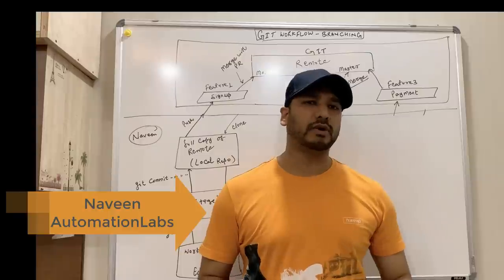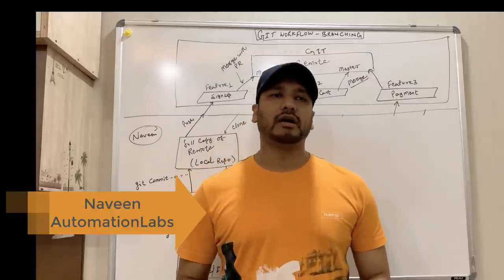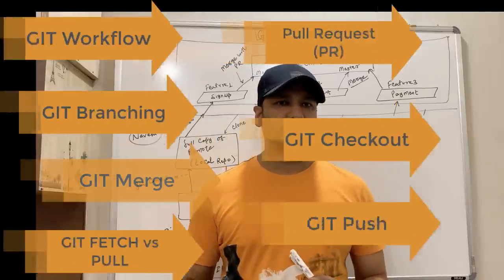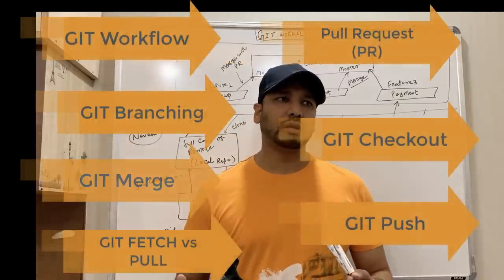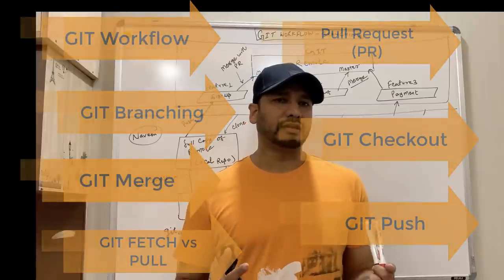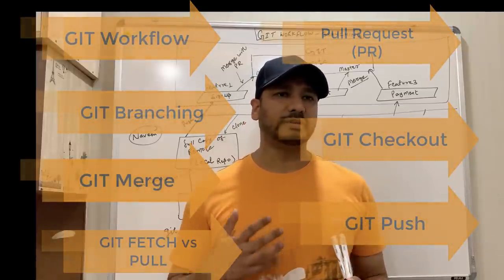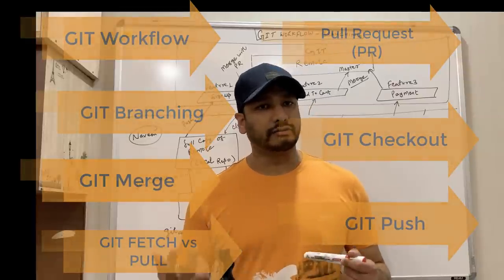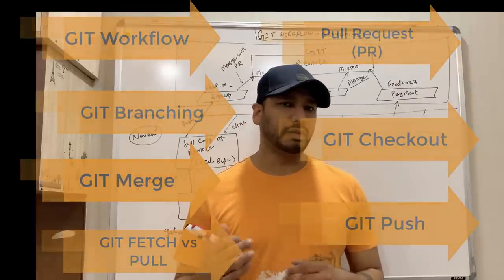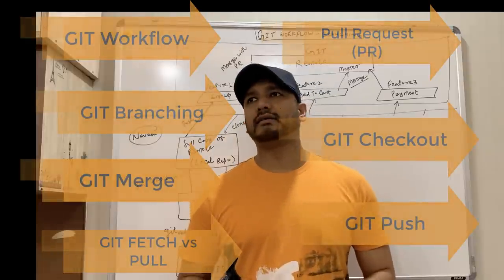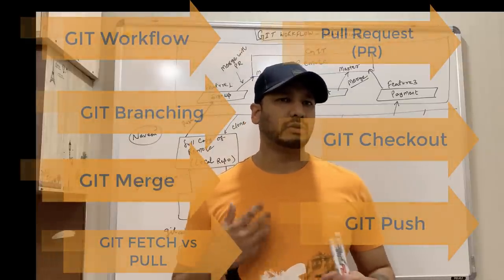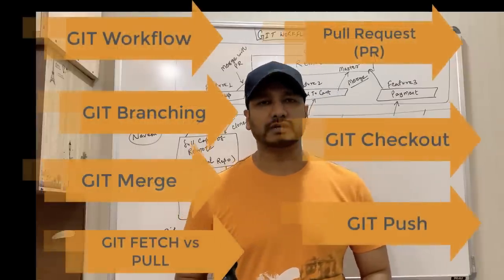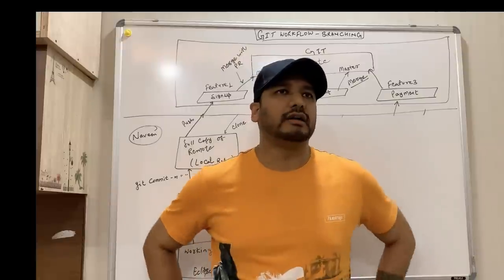What do you mean by Git repositories? What do you mean by different commands? What is the workflow of Git? What do you mean by fetch, pull, push? How do you check out a branch? And you have to understand what are the best factors to do a PR — the pull request — and the PR review process, what is the difference between fetch and pull, and what is the branching concept in Git. It's a slightly confusing topic and most people do a lot of mistakes in terms of learning Git.